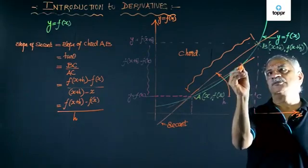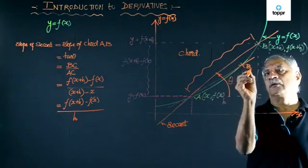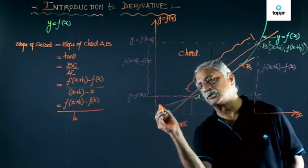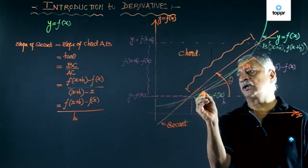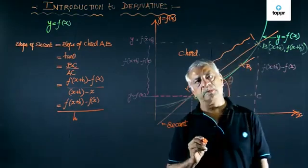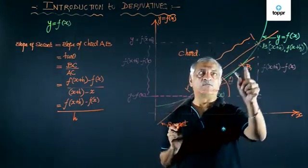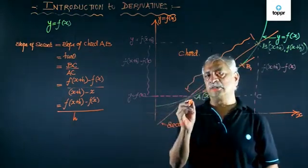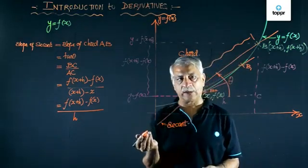So this becomes my point B1. Let us take another point, say B2. This is my point B2. Can I say that finally B can merge with A? My first thought is why not?